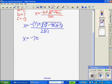And 7 to the second power of 7 squared is 49 minus 4 times 2 is 8. And 8 times negative 3 is negative 24. All over 2 times 2 makes 4.